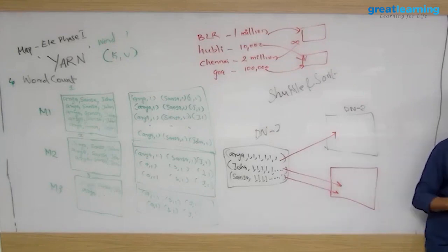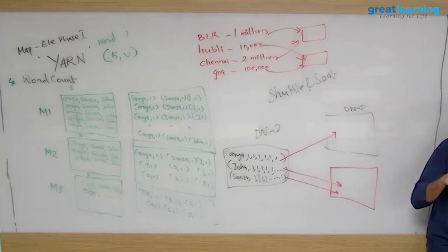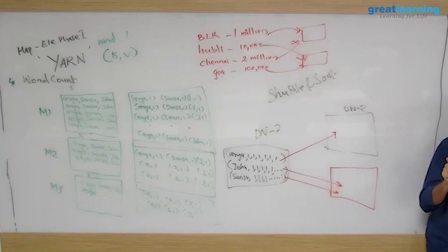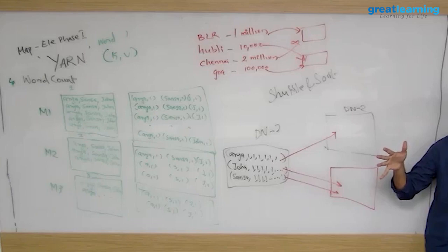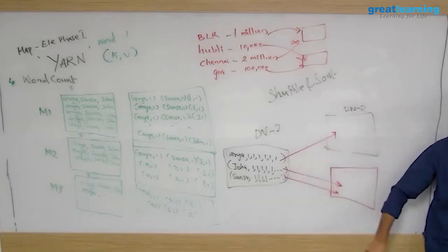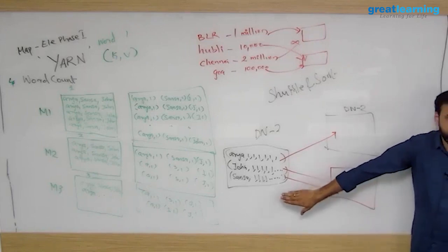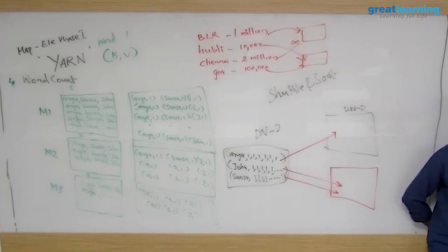Transaction data has many fields — customer number and so on — but for this use case you only need the branch code and the transaction amount as key and value. From 27 columns of 10 terabytes of data, you need only 2 columns, which might be around one terabyte. That can usually fit on one machine. In practice, we've rarely come across a situation requiring true distributed processing because even data nodes have very high-capacity hard disks.